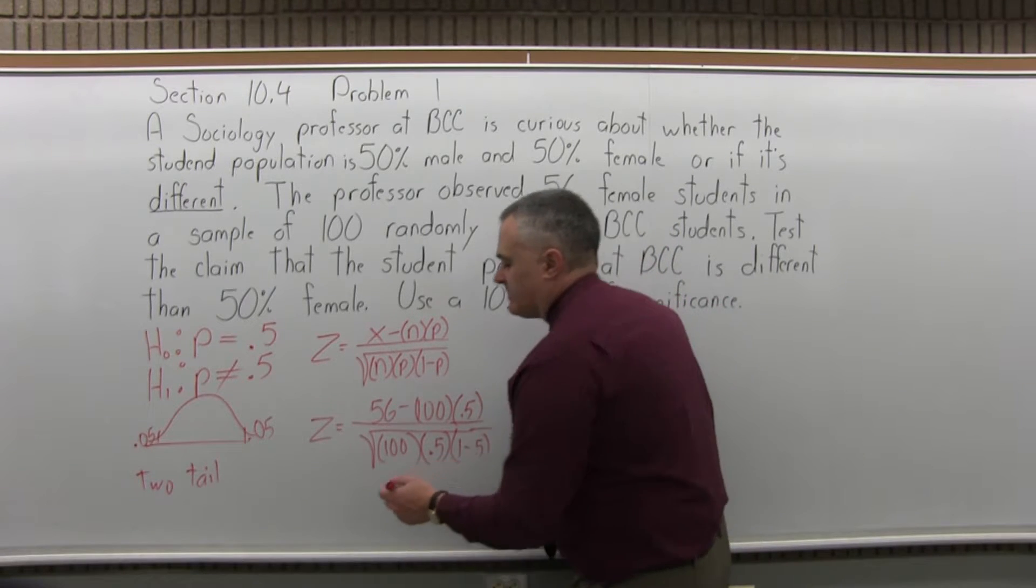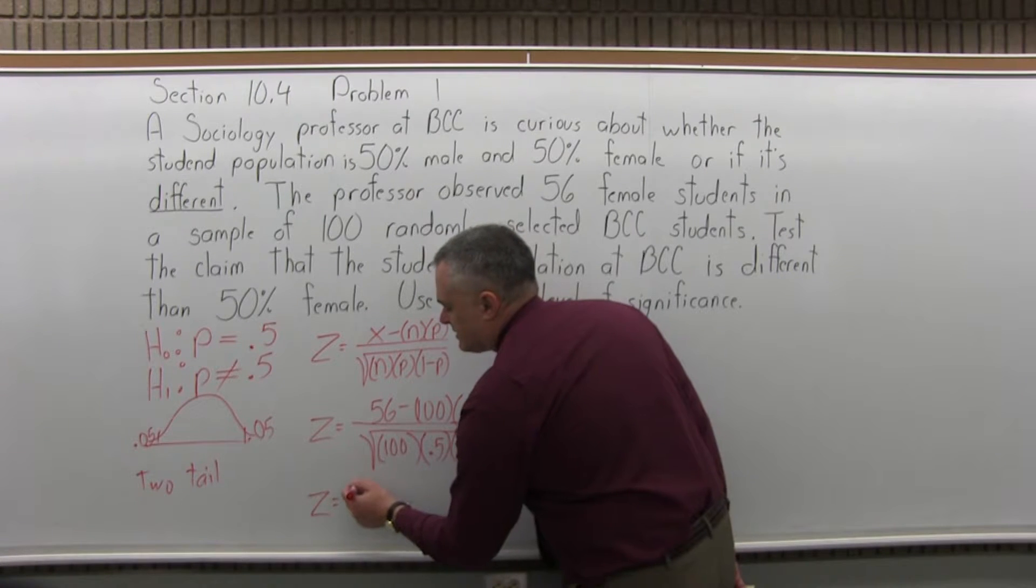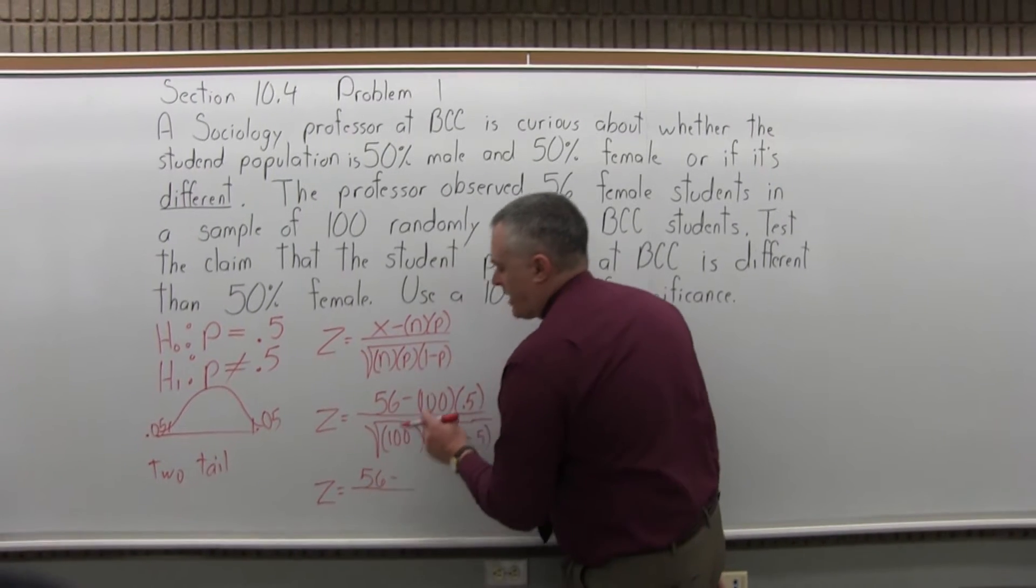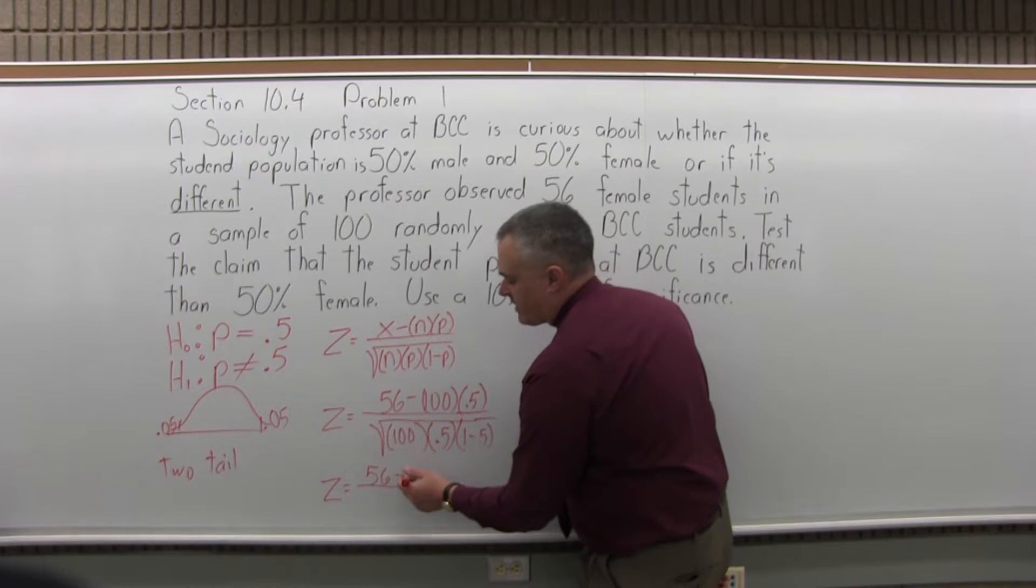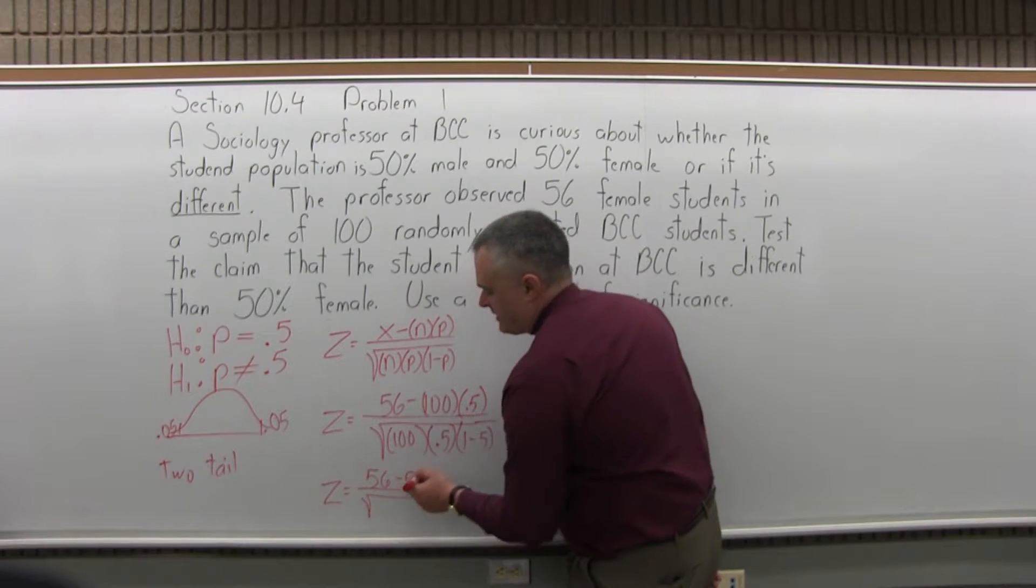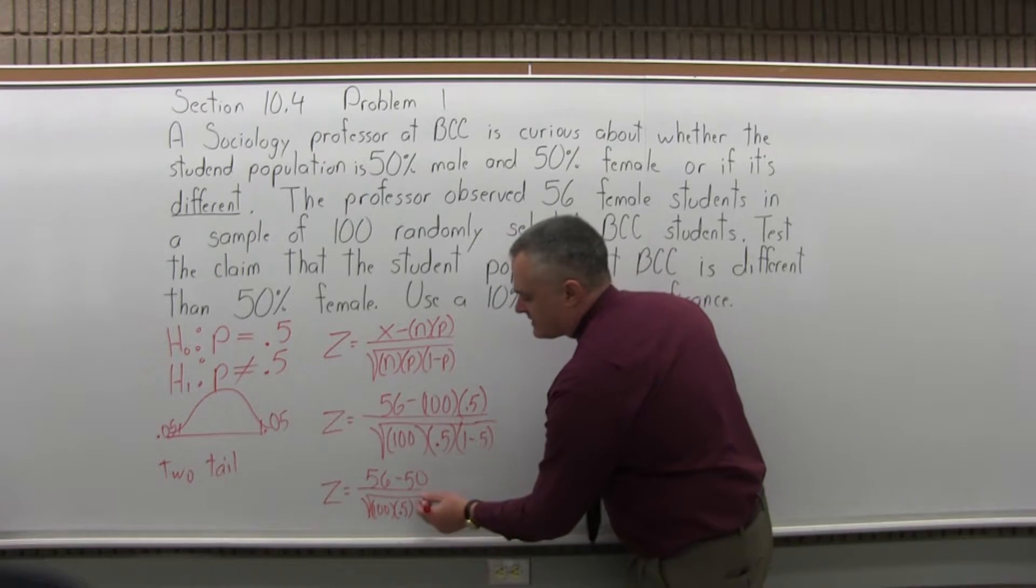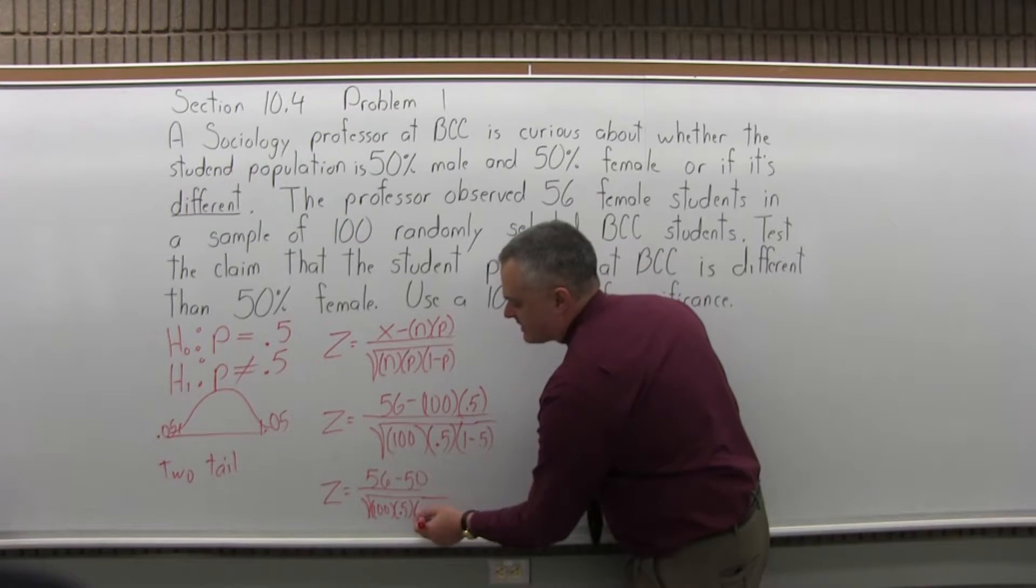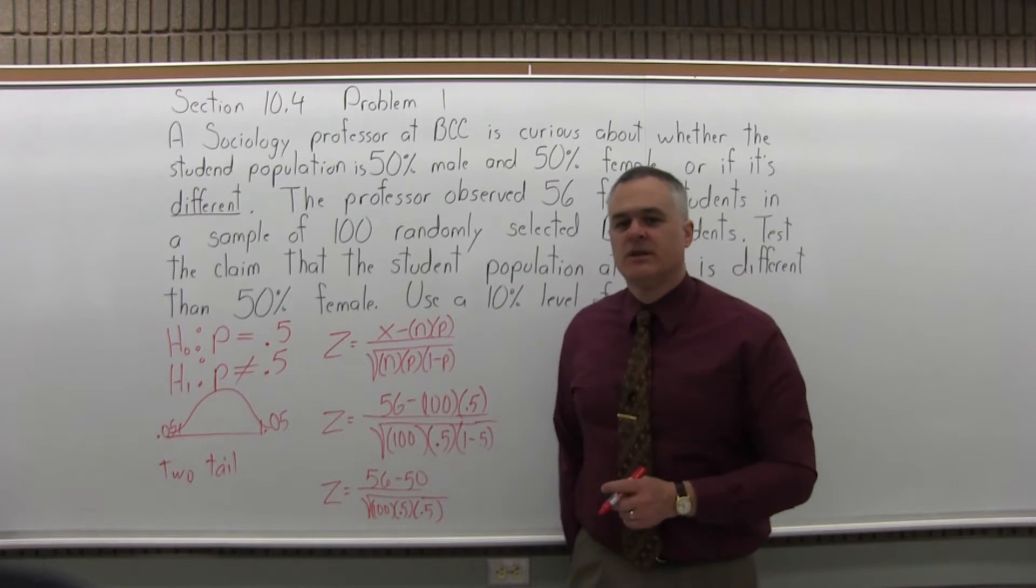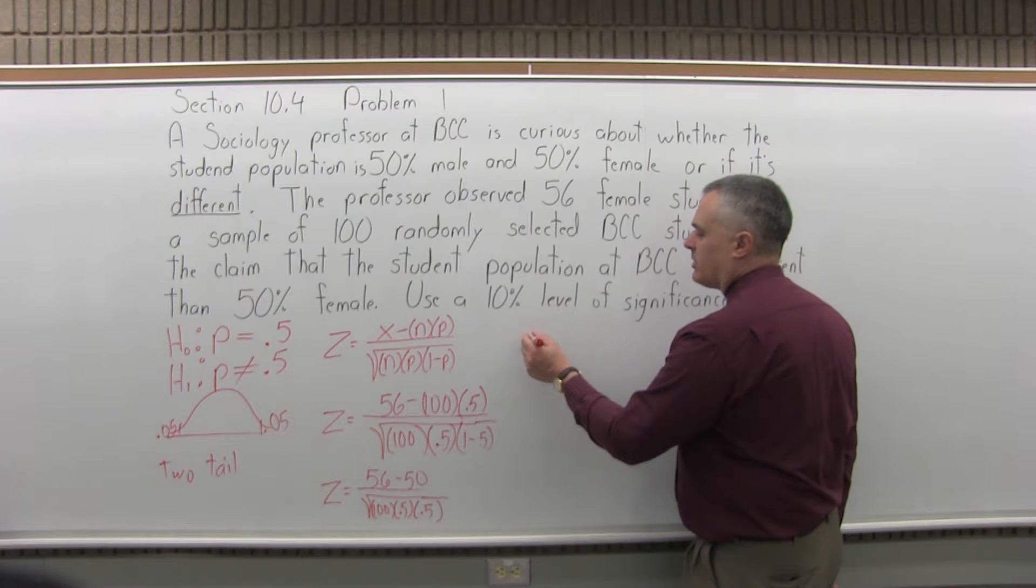So let's work down some of the numbers. z equals 56 minus 100 times 0.5. Well, half of 100 is 50. And under the square root, we'll have 100 times 0.5. Now 1 minus 0.5 is 0.5. So now let's make a little more progress.